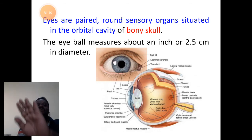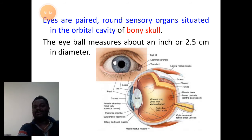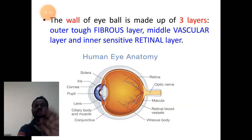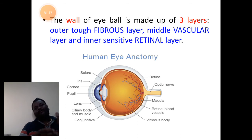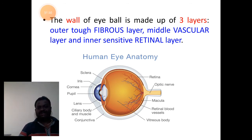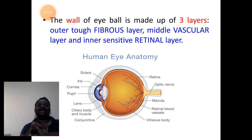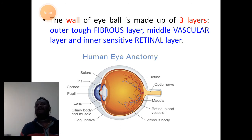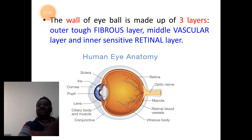This is the general part of the eye we see. The wall of the eye is also made up of three layers: a tough fibrous layer, a middle vascular layer, and an inner sensitive retinal layer.